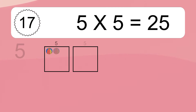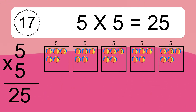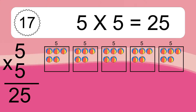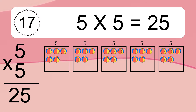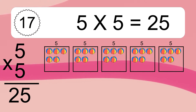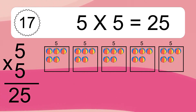5 times 5 equals 25. We have 5 boxes, and each box has 5 colorful balls inside. If you count all the balls in all the boxes together, you will have 5 times 5 balls. This equals 25 balls.